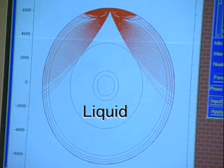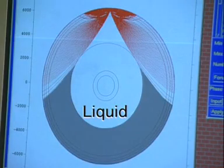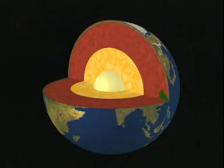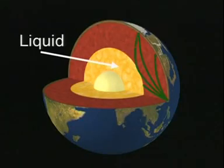S waves cannot pass through liquids. Their shadow zone is caused by the liquid outer core, which is stopping the S waves from traveling through it.